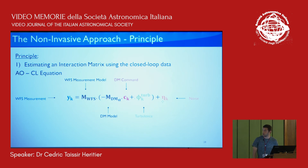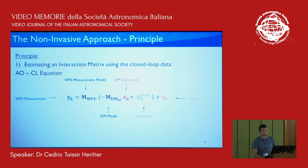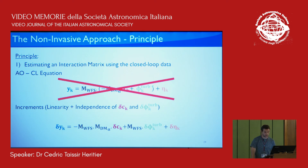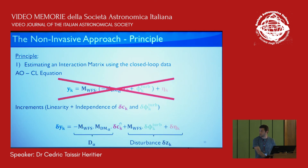How do you get the interaction matrix from AO telemetry data? Here is the basic AO closed-loop equation. The wavefront sensor measurement is basically the propagation of the residual phase, defined as the difference between what you apply on the deformable mirror — the M command — and the turbulence phase. This is propagated into the wavefront sensor and the whole measurement is impacted by a noise source. What we do is consider increments of signals, which relates to statistical independency between commands and turbulence phase, and also linearity. By doing so, the interaction matrix of the system appears, impacted by a disturbance I call Z.